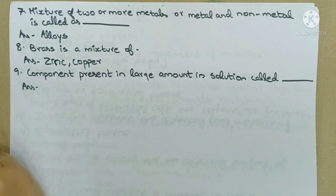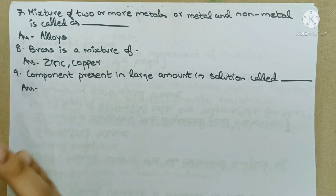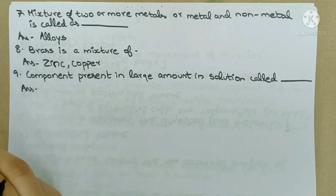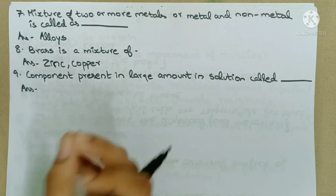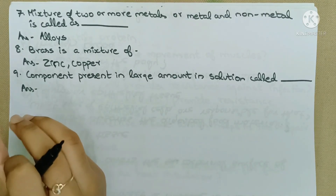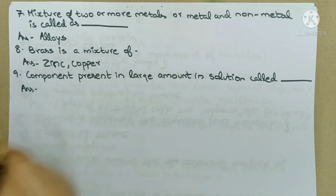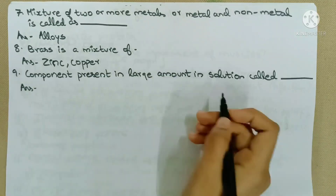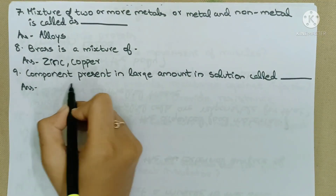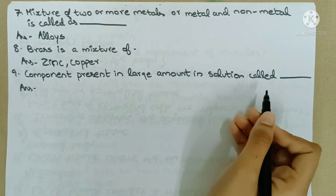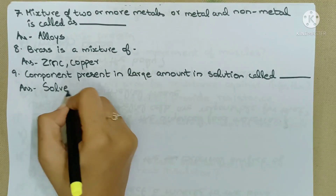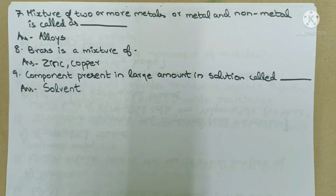For example, in a sugar solution, you have one glass of water and one spoon of sugar. Water is present in large amount, so water is the solvent.